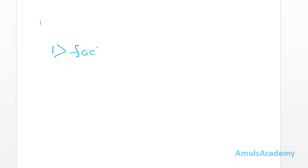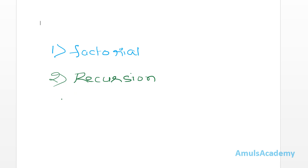We can write the factorial program in three ways. The first way is using the inbuilt function factorial in the math module. The second way is using recursion, and the third way is using an iterative approach without recursion. Today in this tutorial we are writing the program using the inbuilt function.